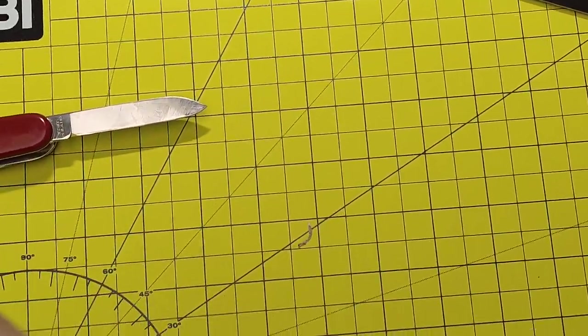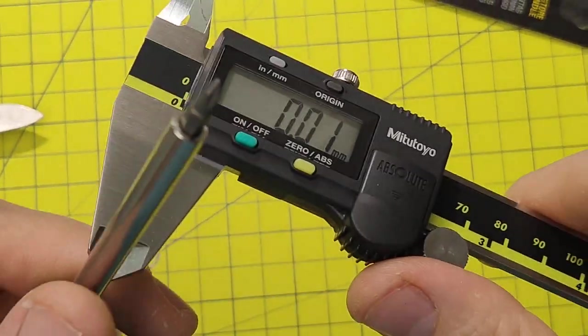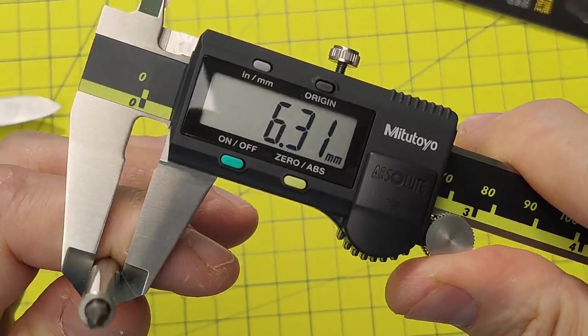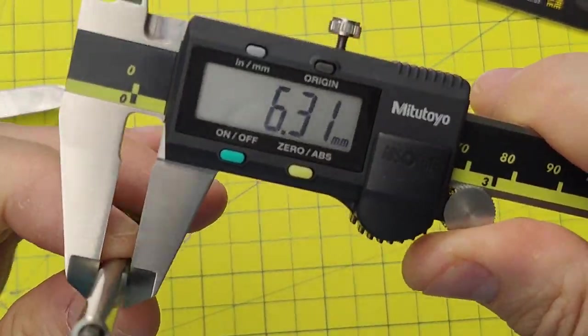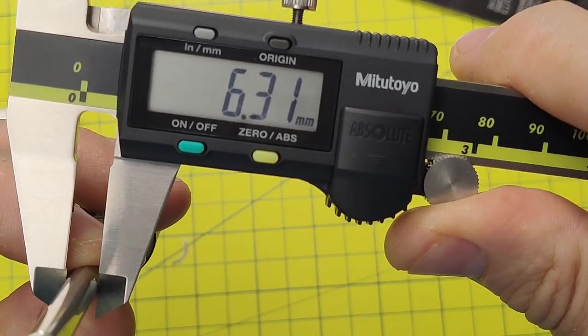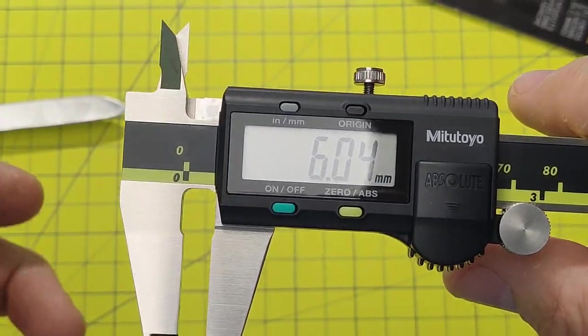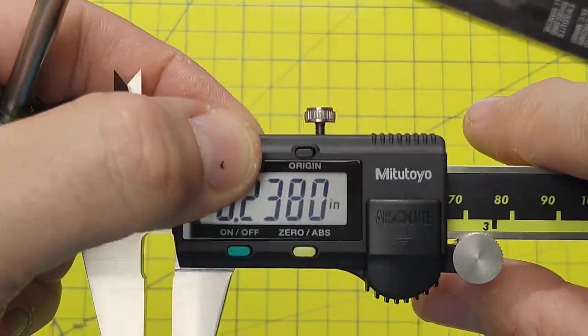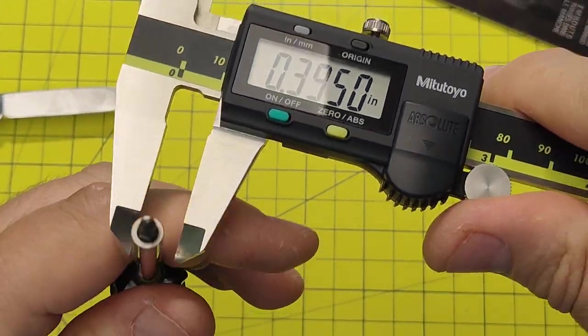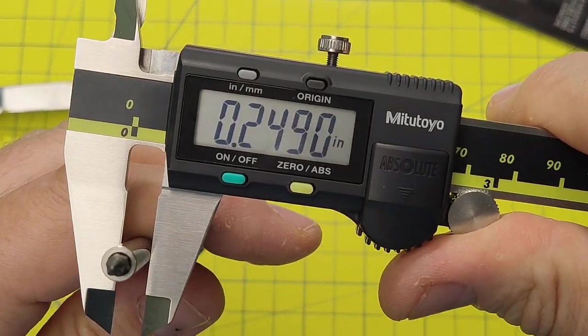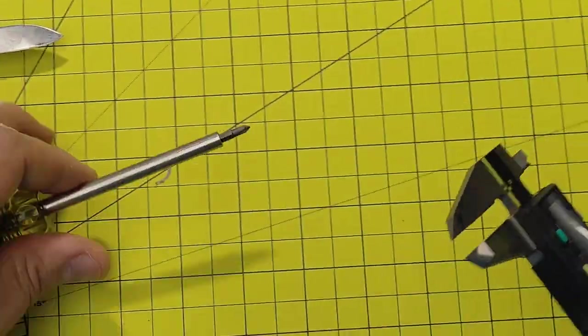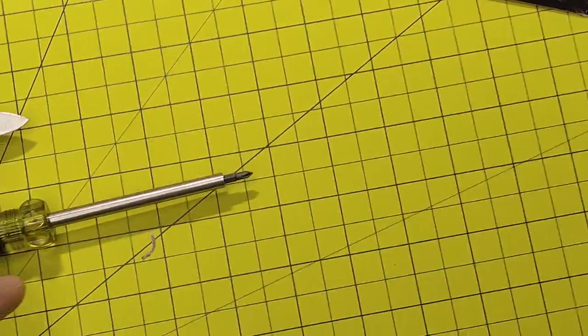Let's see how thick it is. All right, so we have my trusty micrometer. So it's 6.35 millimeters or quarter of an inch, quarter of an inch thick.